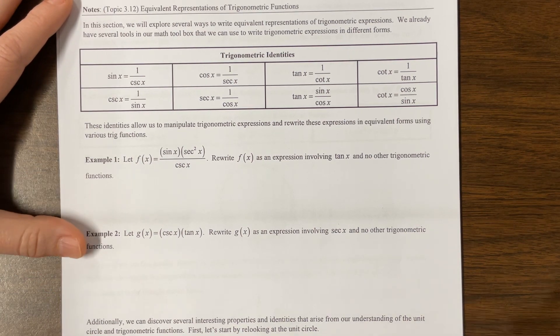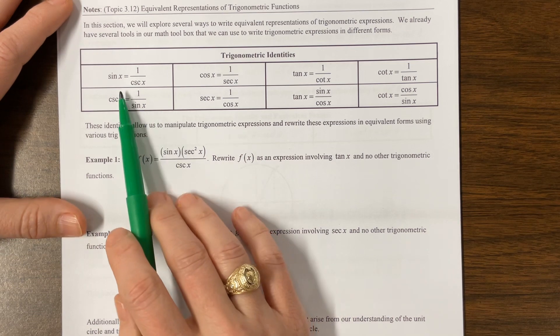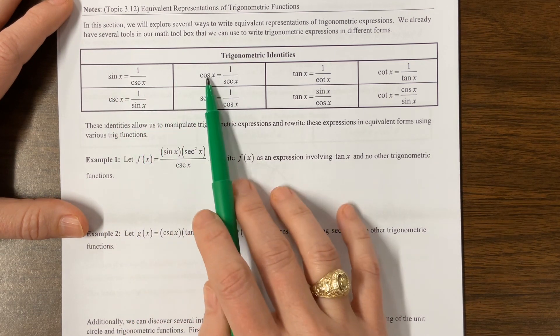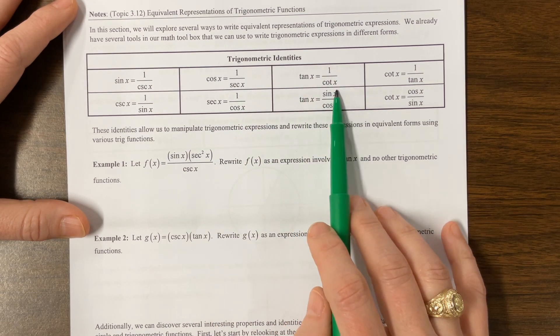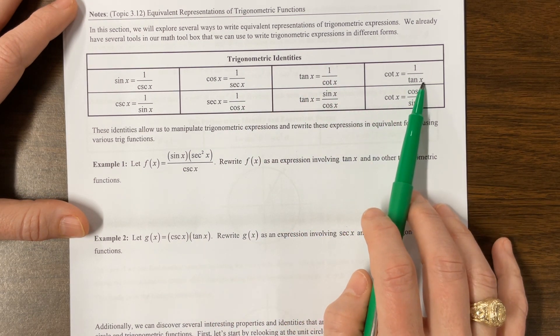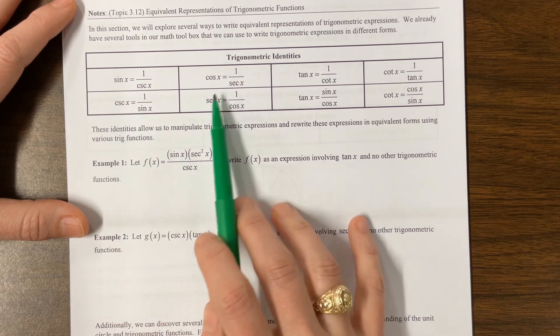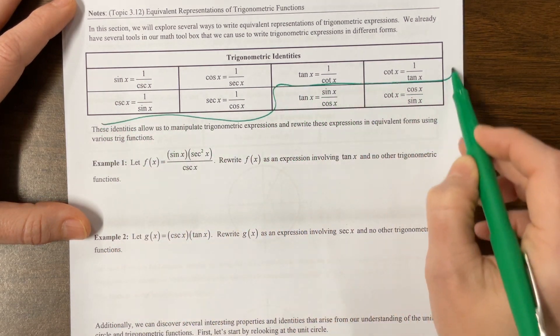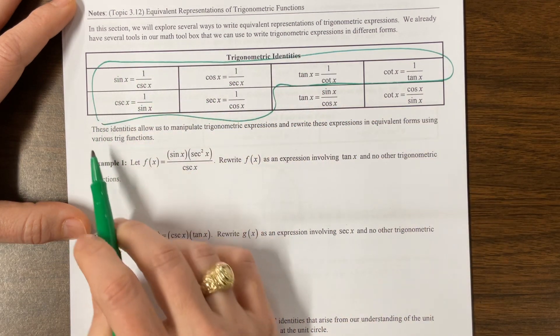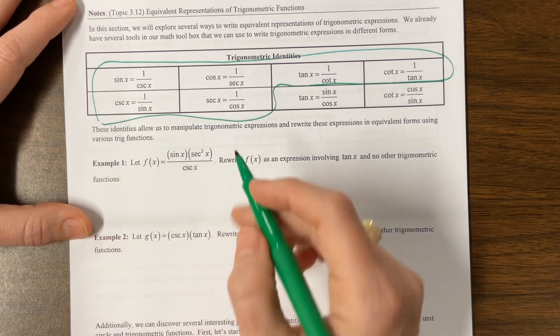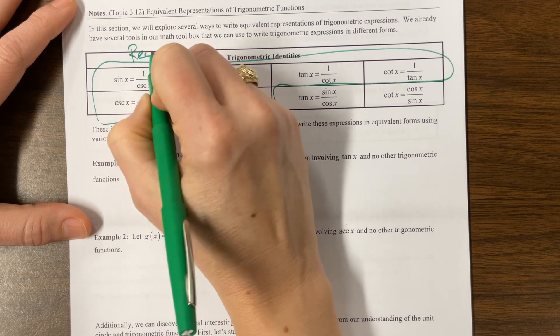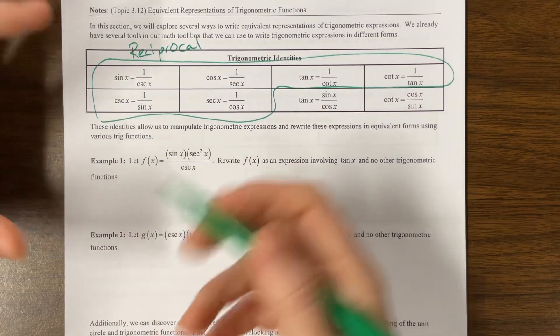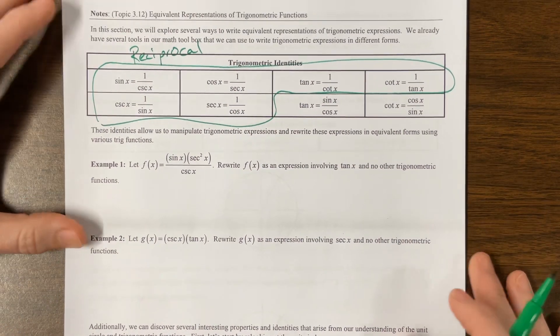Okay, so we begin. He begins here by giving us some more of the identities. So we know that sine is 1 over cosecant, cosine is 1 over secant, tan is 1 over cotangent. Cotangent is 1 over tangent. Cosecant is 1 over sine. Secant is 1 over cosine. These are referred to as the reciprocal identities because each of these functions can be written as reciprocals of others.